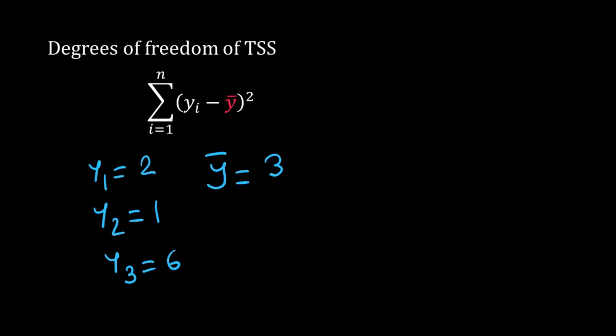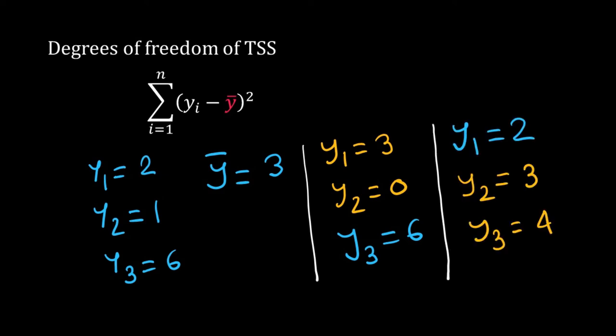Now I want to change the values of y1, y2 and y3 but want to keep the mean at 3. One solution is y1 equal to 3, y2 equal to 0, y3 equal to 6. So I kept y3 same, changed y1 and y2 but the mean is still 3. Or another solution could be y1 equal to 2, y2 equal to 3, y3 equal to 4. Now I kept y1 unchanged and changed the other two and the mean is same, 3. So my degrees of freedom here is 3 minus 1.